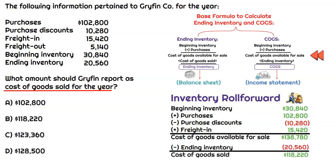Now all we need to do is subtract ending inventory, which the question tells us is $20,560, and that gives us cost of goods sold that would be recorded for the income statement of $118,220.